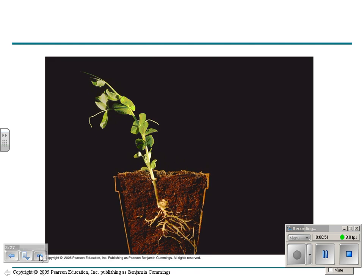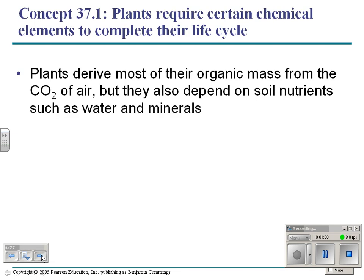This shows the typical cutaway of a plant — here's where it gets its water and minerals, its leaves, and carbon dioxide. Plants derive most of their organic mass from CO2 of air, but they also depend on soil nutrients such as water and minerals. We're going to talk about a couple of important ones of those today.